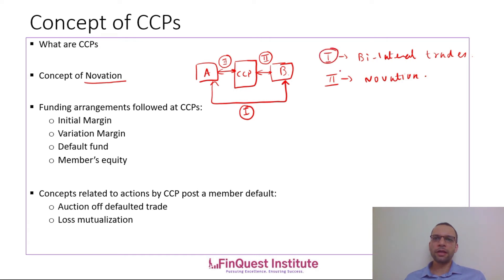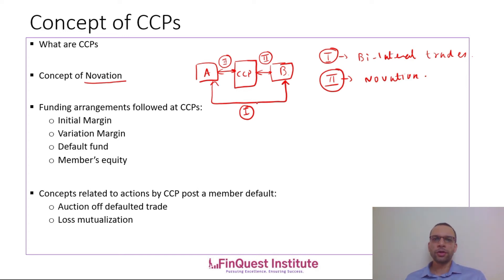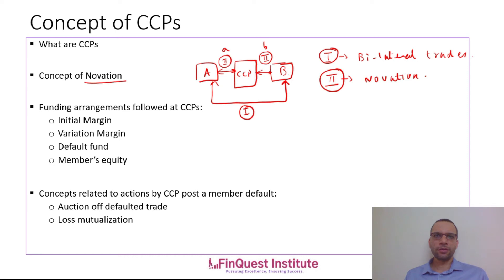Contracts done via bilateral path and CCP-cleared path are absolutely equivalent to each other — the only difference is that the CCP in the second path provides clearing and settlement services, thereby reducing embedded credit risk. It's called novation because we are creating something new: what was one bilateral trade is now split into two parts, with the CCP sitting in between.